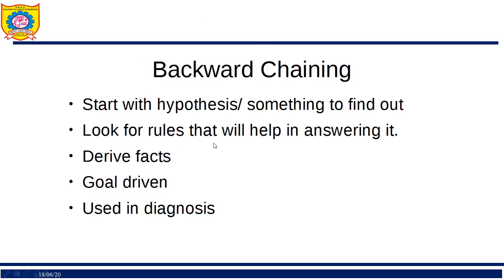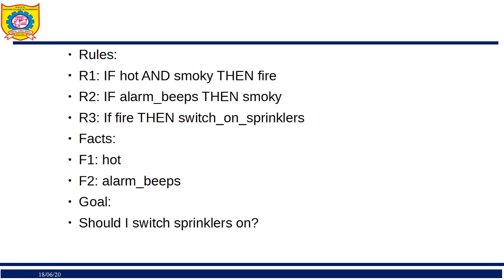In backward chaining, we look for rules that will help us answer the goal. This approach is commonly applied in medical diagnosis. Given the same rules and facts, our goal here is: should I switch the sprinklers on?